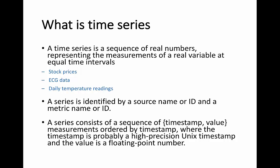So what's the definition of time series? A time series is a sequence of real numbers that represents the measurement of a real variable at equal time intervals. A series is identified by a source name and a matrix name. It consists of a sequence of timestamp and value combinations, ordered by timestamp.